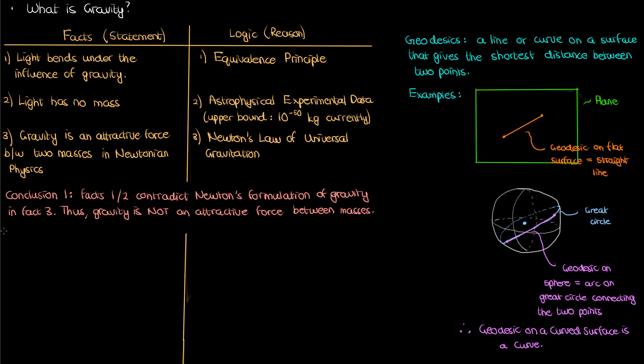So going back to my facts and logic table, these two examples illustrate the point that the geodesic on a flat surface is a straight line, while the geodesic on a curved surface is a curve. The logic behind this is common sense, as we showed, but you can also show this mathematically using calculus of variations. I actually have two videos in my calculus of variation series where I derive the equations for the geodesic on a plane, straight line, and the geodesic on a sphere, arc on the great circle.